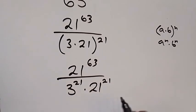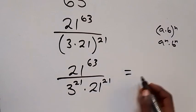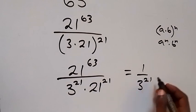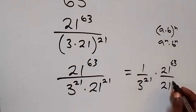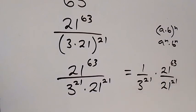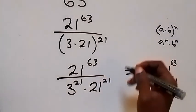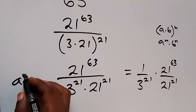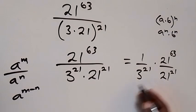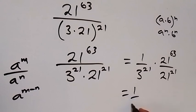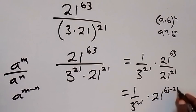Then we can also separate this and write it as 1 over 3 raised to power 21, then multiply by 21 raised to power 63 divided by 21 raised to power 21. From here, we can apply the law of indices — when we have a raised to power m divided by a raised to power n, this can be written as a raised to power m minus n. Therefore, when we apply this here, this becomes 1 over 3 raised to power 21 multiplied by 21 raised to power 63 minus 21.